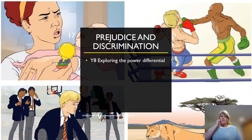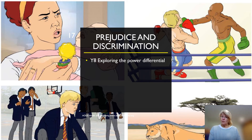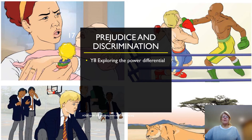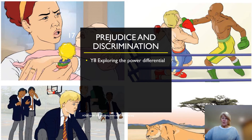In the anti-bullying materials for year eight, the power differential in bullying relationships is focused on. There are some pictures to show different relationships, and learners look at the different ways that one person or group can have power over another — because they're bigger, there's more of them, they're stronger, they have access to some information that the target doesn't want others to know. Then in year nine, the idea of prejudice and discrimination builds on that work. Prejudice is viewed as a negative attitude towards members of a group based on a negative stereotype, and discrimination is viewed as action taken on the basis of that attitude, which then disadvantages individuals from particular groups.